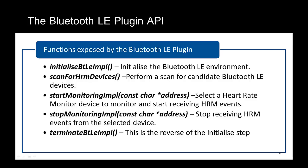The user would select a suitable device, and then the application would want to start receiving heart rate measurements from the selected device. The application itself would want to be able to tell the heart rate monitor to pause the sending of heart rate data to it. And finally, the application would want to tell the plugin to clean up the resources it's using to communicate with the Bluetooth stack itself in preparation for exiting.